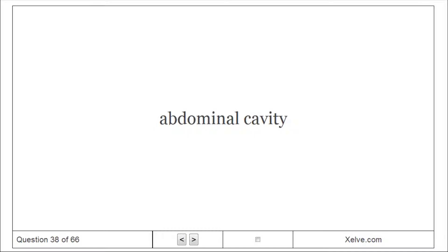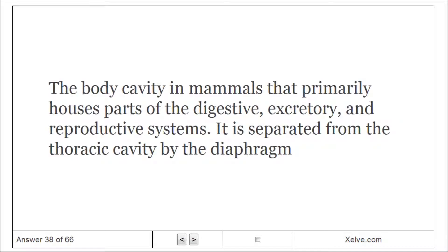Abdominal cavity: The body cavity in mammals that primarily houses parts of the digestive, excretory, and reproductive systems. It is separated from the thoracic cavity by the diaphragm.